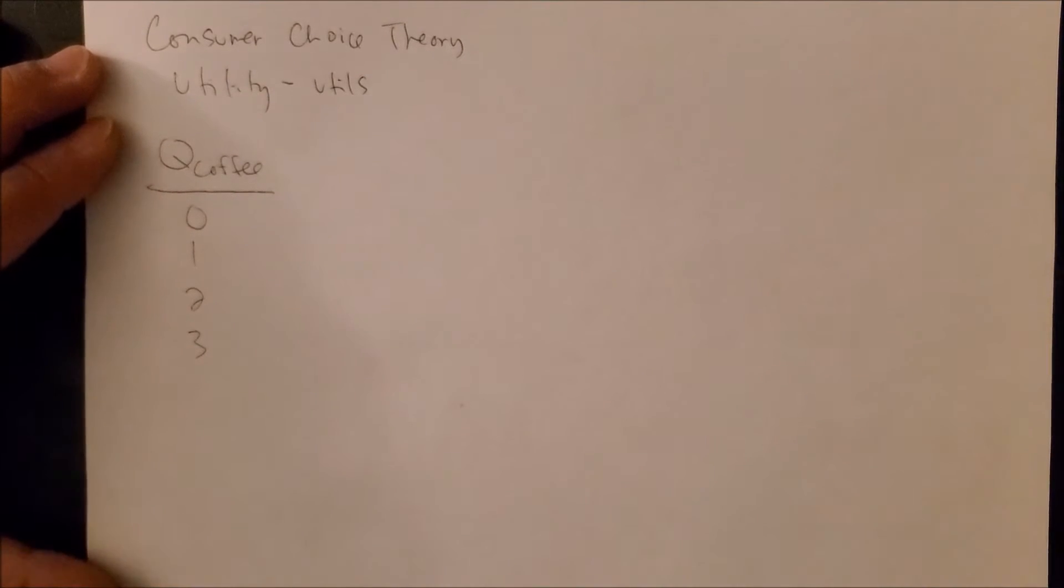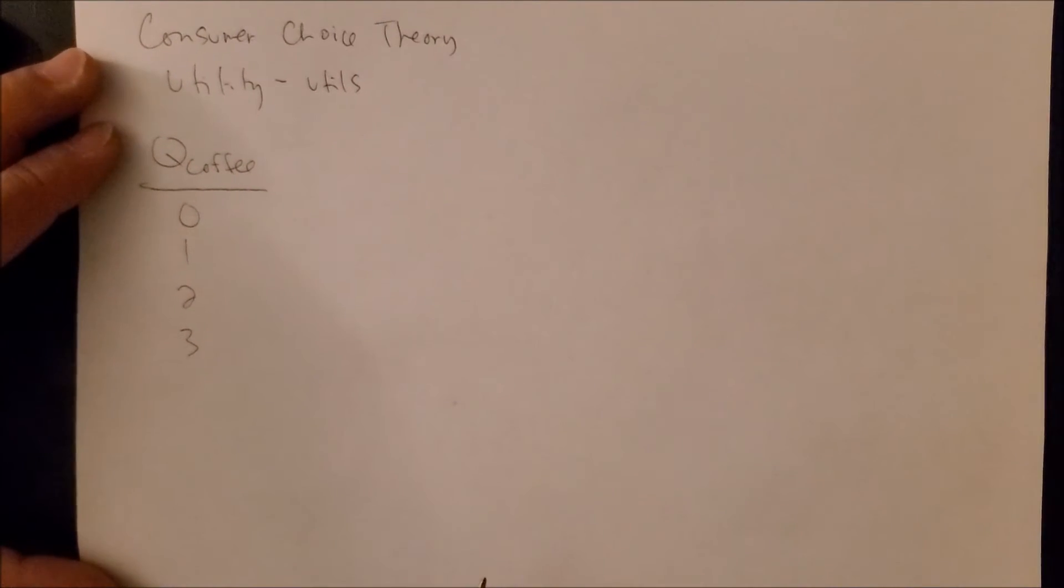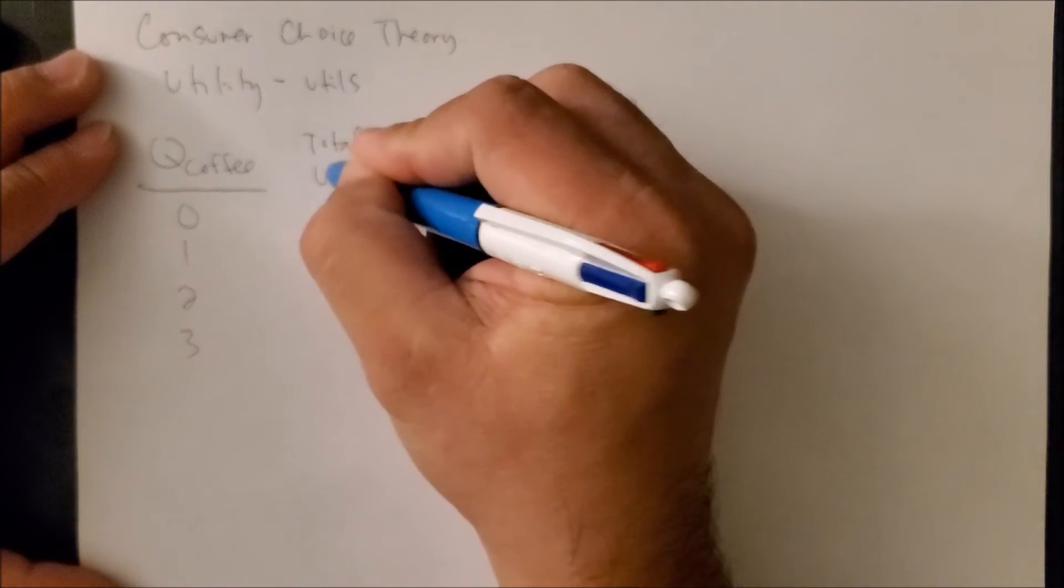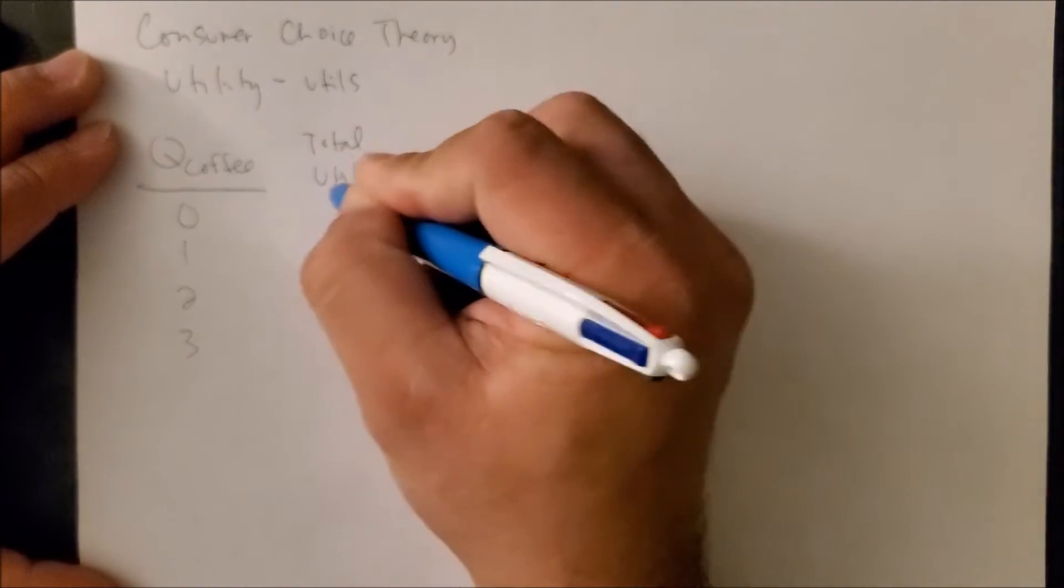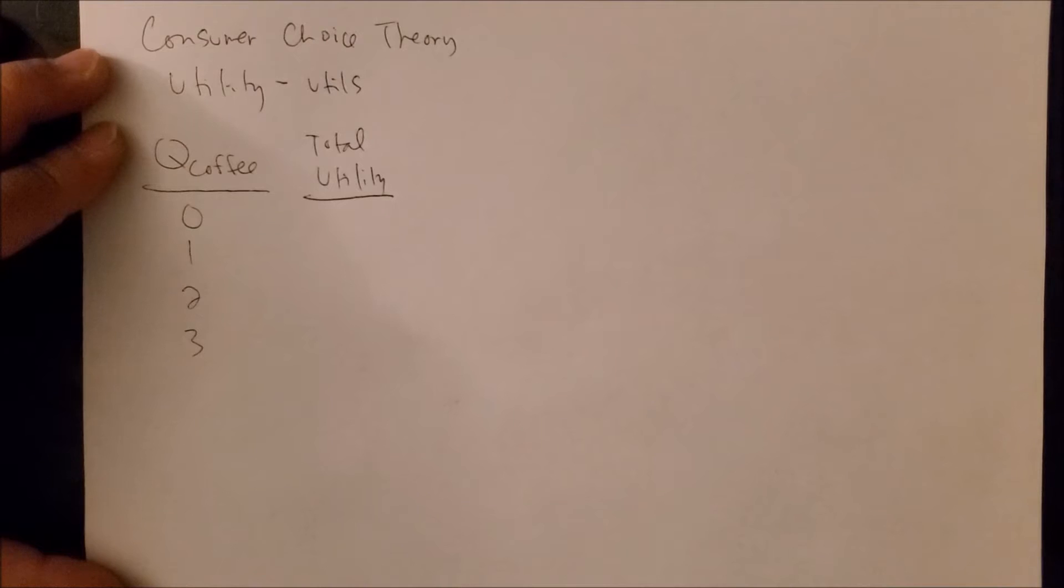The next column we need to know is something called the total utility, which really means how much satisfaction you get when consuming zero cups of coffee or one or two or three. This is kind of where it becomes quite challenging because we have to know what type of parameter you were using when measuring total utility. Are you using a scale of zero to five or one to ten? Are you using a scale from zero to one hundred or one to one thousand?